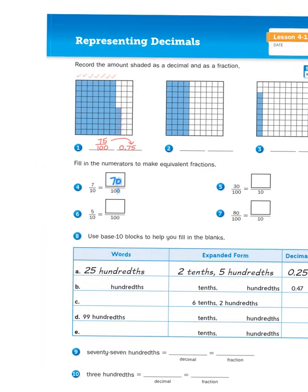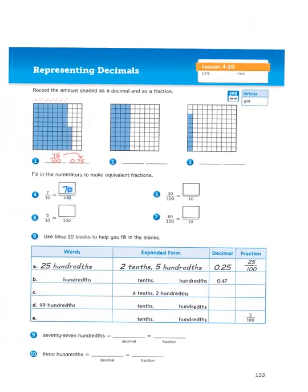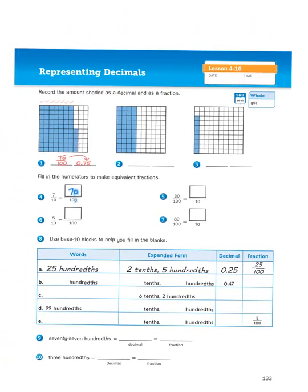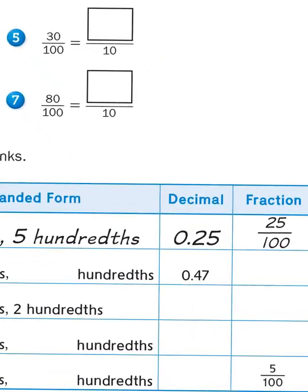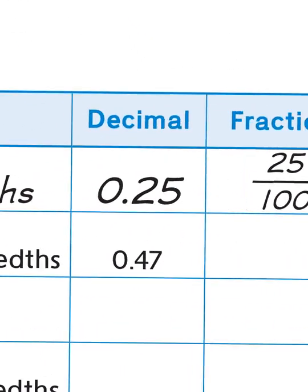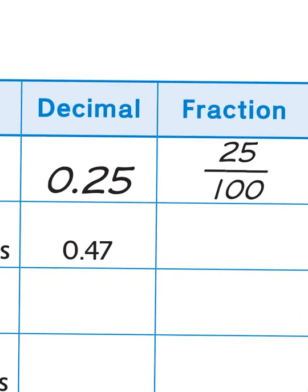For the problems under number eight in the table, it says use base ten blocks to help you fill in the blanks. And so we are expressing fractional amounts in words, using expanded form, using the decimal form, and then the fractional notation. So if you take a look at row B, the only clue we have here is the decimal version, 0.47, or 47 hundredths.